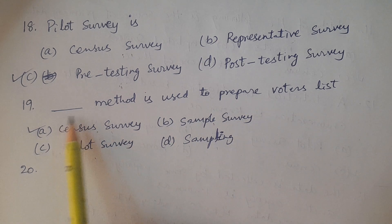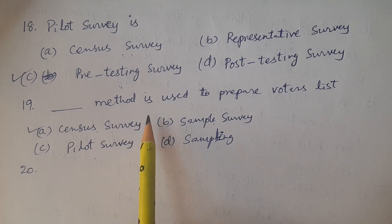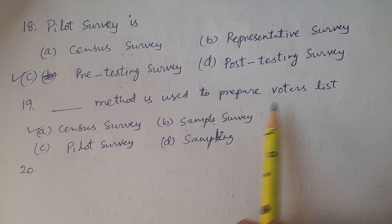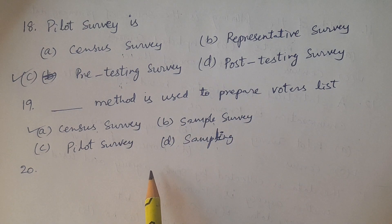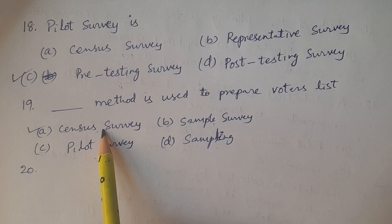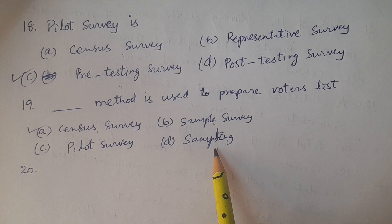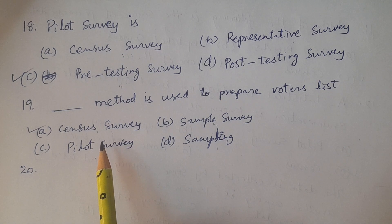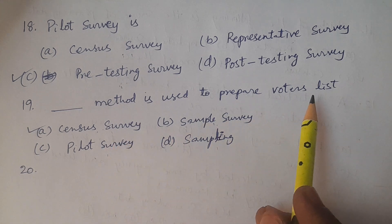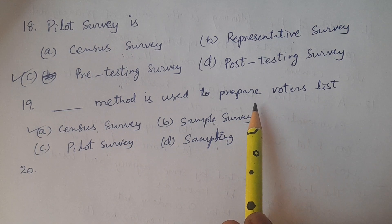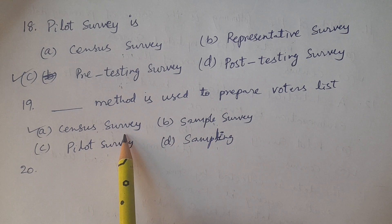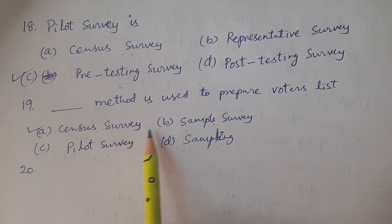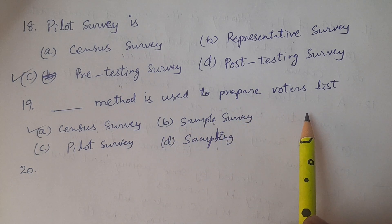Census is usually conducted every 10 years, and the voters list is prepared using Census survey. The best method to prepare the voters list is the Census survey, and it is one of the most useful methods for this purpose.